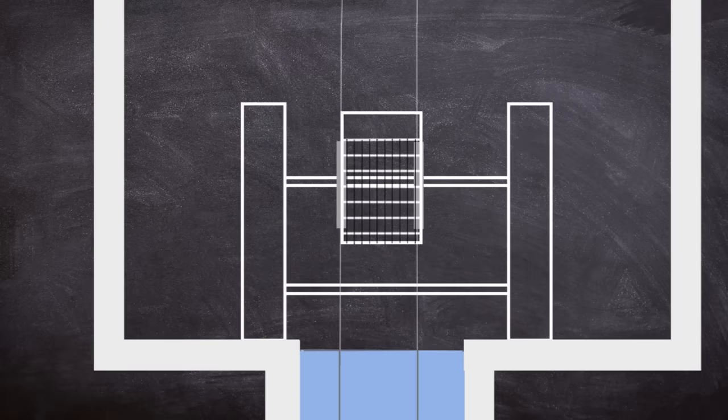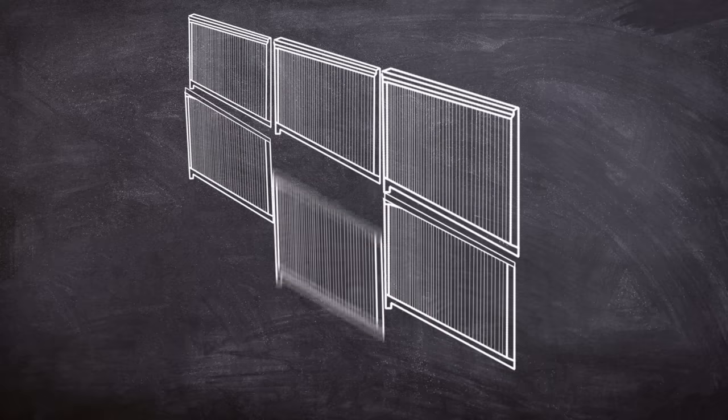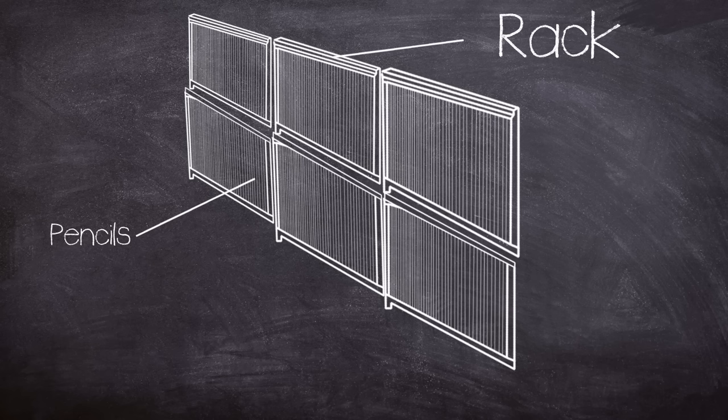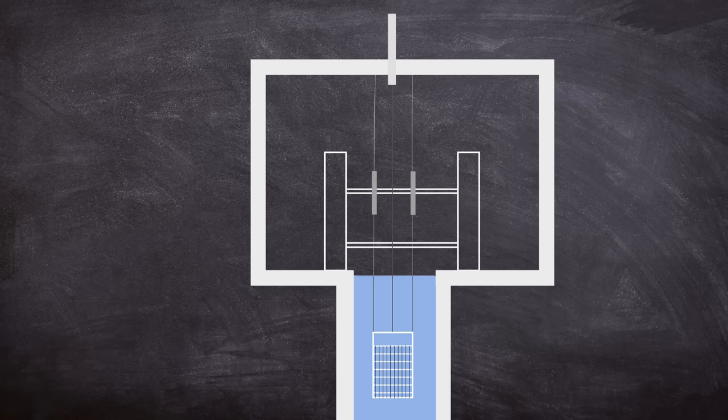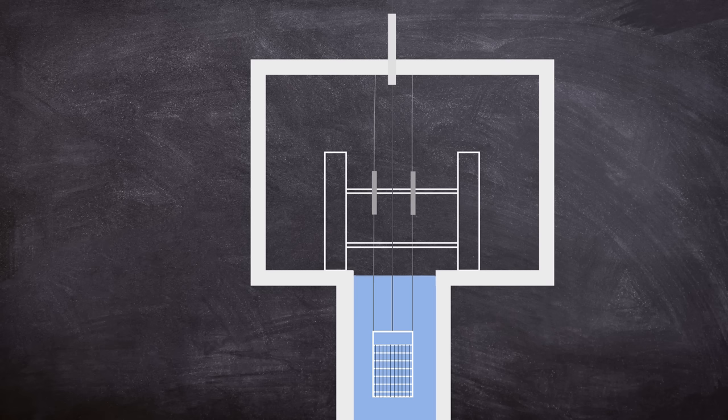The Cobalt-60 was mounted on a source rack, consisting of six modules containing multiple pencils of the radioisotope made up of two source elements within. To even out the dosage, dummy pencils were also installed in each module, totaling 42 pencils per module. When not in use, the rack is stored in a water tank, and this shields staff from gamma radiation.